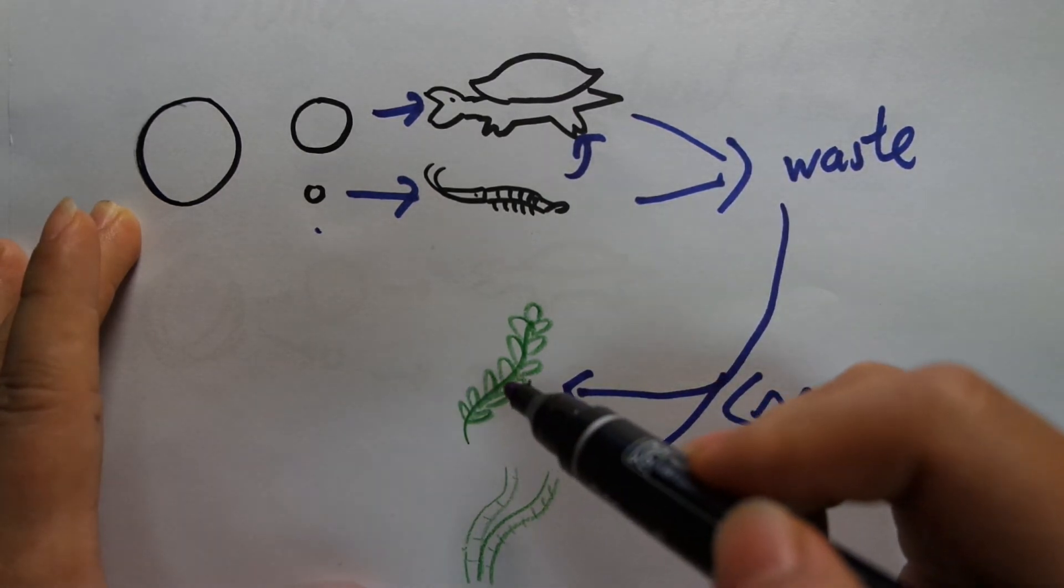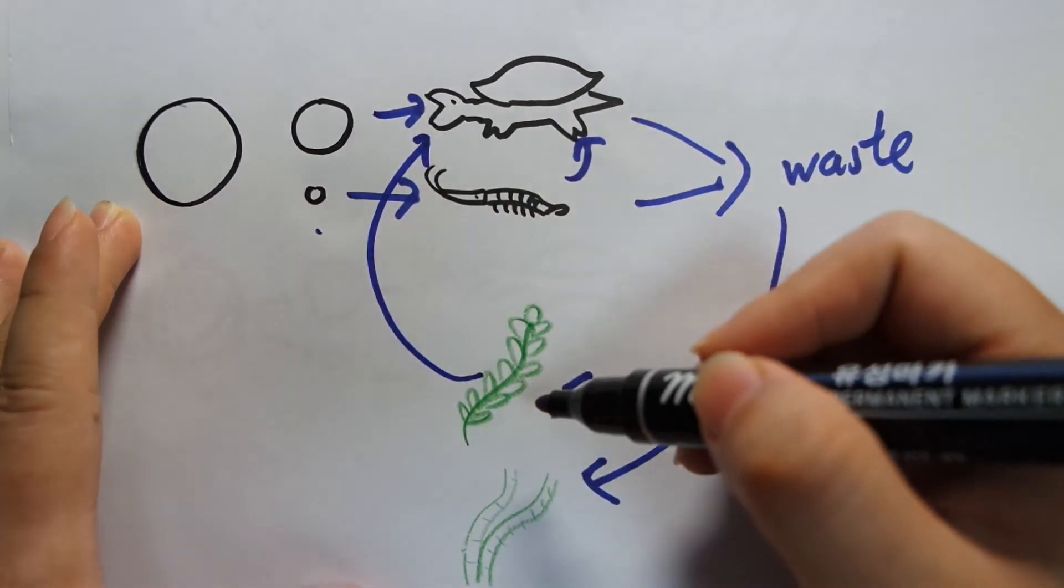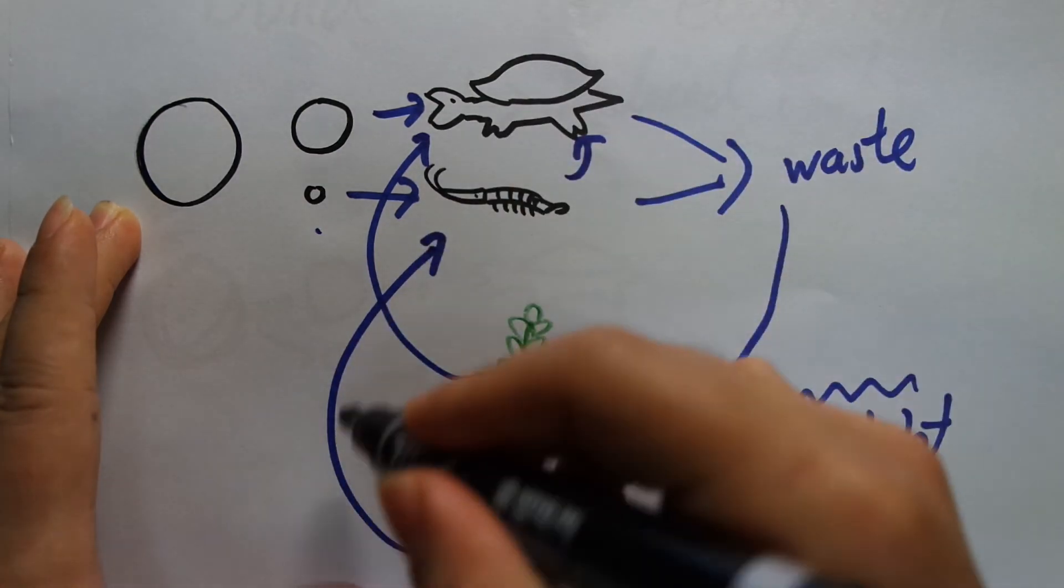And what happens to these plants? The turtles can also eat the plants and the shrimp will eat the algae. So you have these multiple loops going on.